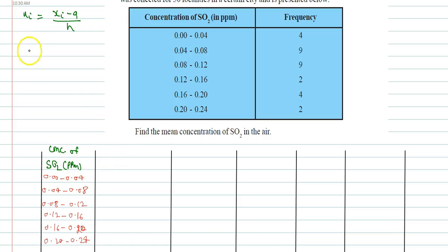So I can calculate xi. xi is given by the average of upper limit and lower limit in the interval, so I can write xi as average of 0.00 plus 0.04 by 2 will be 0.02. Here it will be 0.06, here 0.10, and similarly 0.14, 0.18, 0.22. So this is the xi.